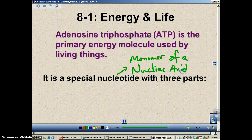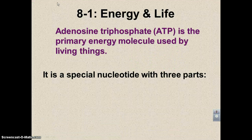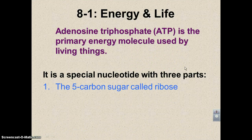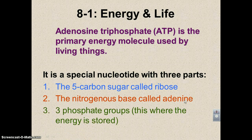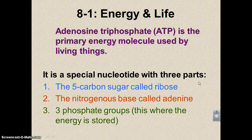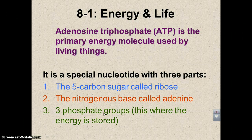ATP is very similar to what's in DNA and RNA. It has a five-carbon sugar — in ATP the sugar is ribose, so it's very similar to an RNA nucleotide. It also has a nitrogenous base, which in this case is adenine — that's where the word 'adenosine' comes from. What makes ATP different from other nucleotides is that it has not one but three phosphate groups. It's between these phosphates where the energy is stored.